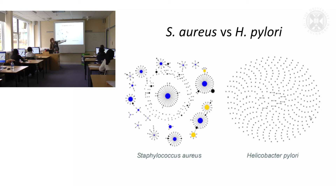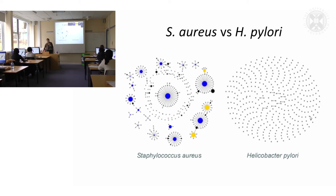What could you say about this species of bacteria here? If this is a different species and each of those dots represents a sequence type, what do you think it means? — They're not very similar. — Exactly, so it's not as clonal. That's absolutely right.